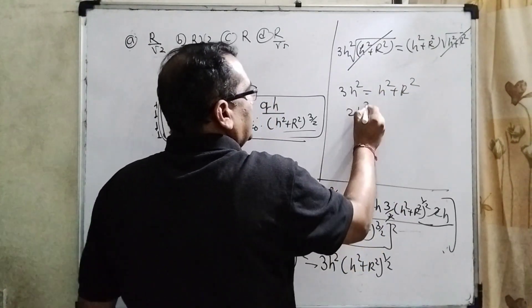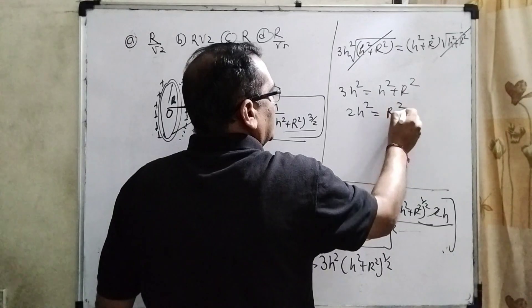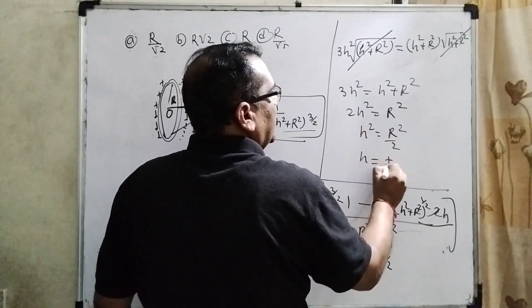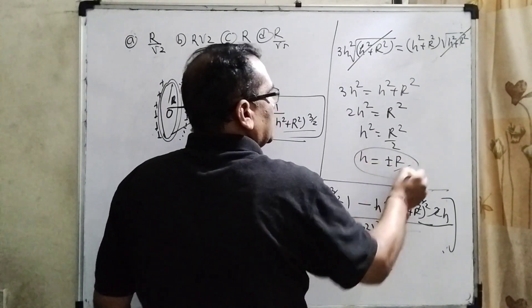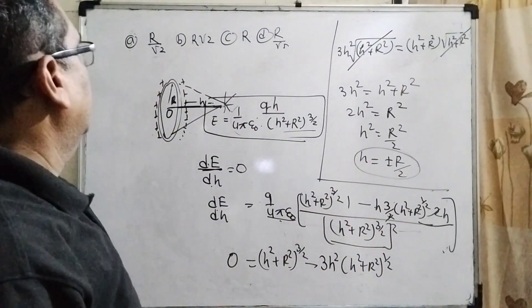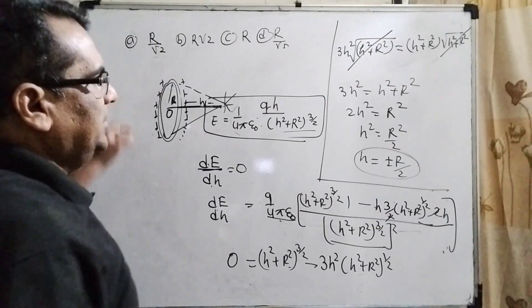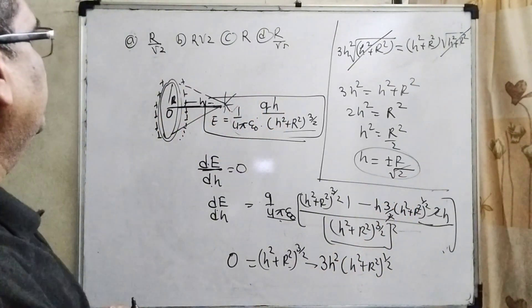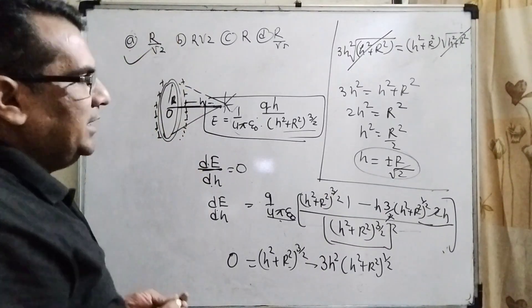Then 2h² equals R². Then h² equals R²/2. It means h equals plus or minus R over root 2. So here is the correct answer. Let's see which option: R by root 2. Which option is correct here? Option A is correct.